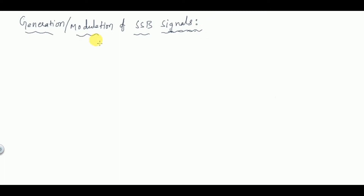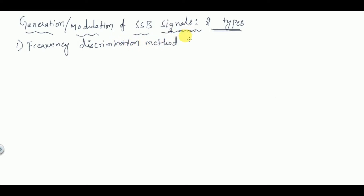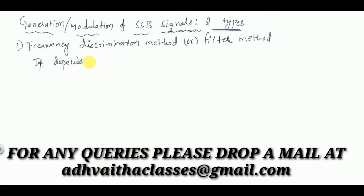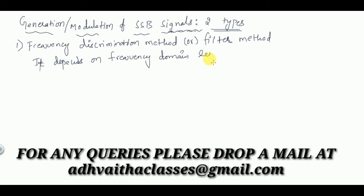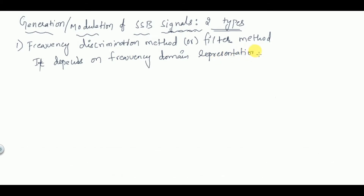For the generation of SSB signals, there are two types. The first is the frequency discrimination method, also called the filter method. This method depends on the frequency domain representation of SSB.